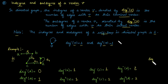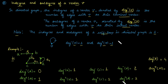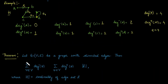The total in-degree of graph H equals the sum of all in-degrees, which is four. The total out-degree of graph H also equals four. The total number of edges in this graph is four.